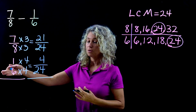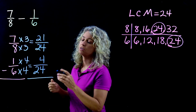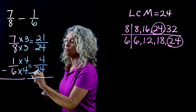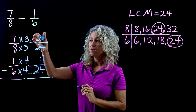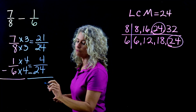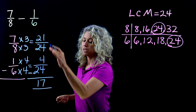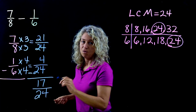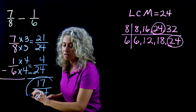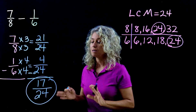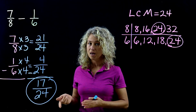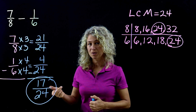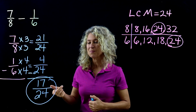We're ready to complete the problem. Notice this is subtraction — a very common error for students is to add instead of subtract, so make sure you're watching that sign. Subtracting: 21 minus 4 is 17, and the denominator stays the same. This fraction is already in simplest terms — 1 is the only number that goes into both 17 and 24.